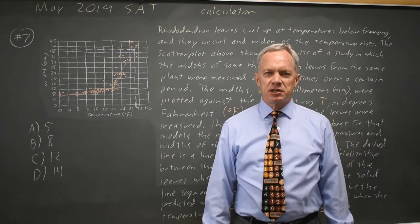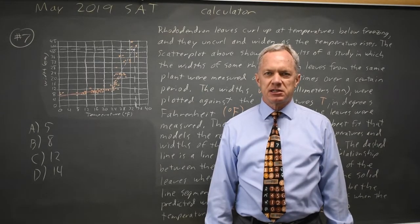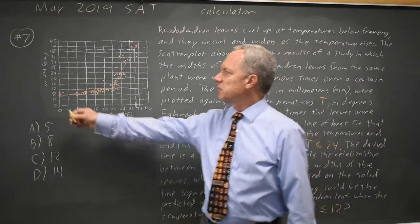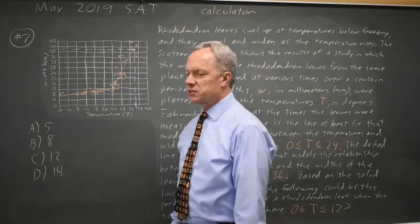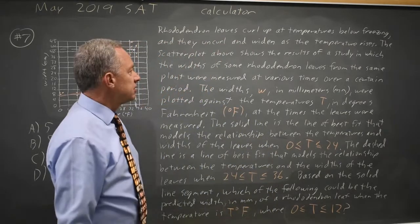This is calculator question number 7 from May 2019 SAT. College Board gives us a scatter plot showing the width of rhododendron leaves versus the temperature at which that width is measured.